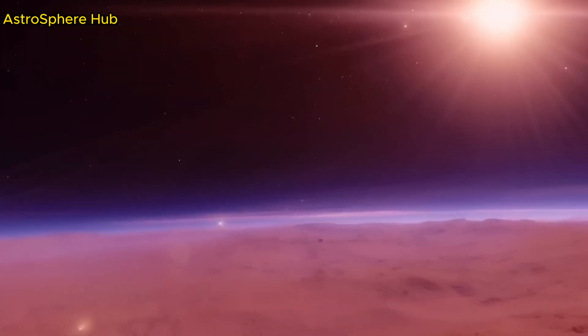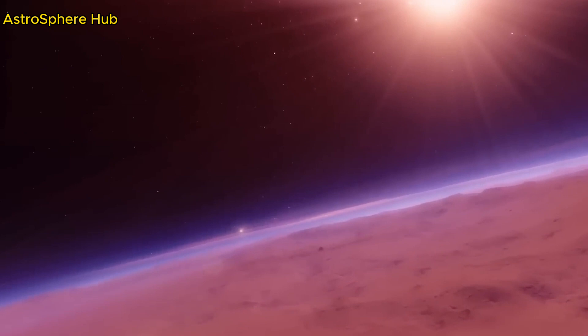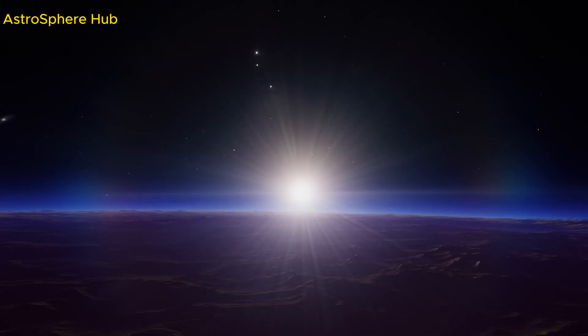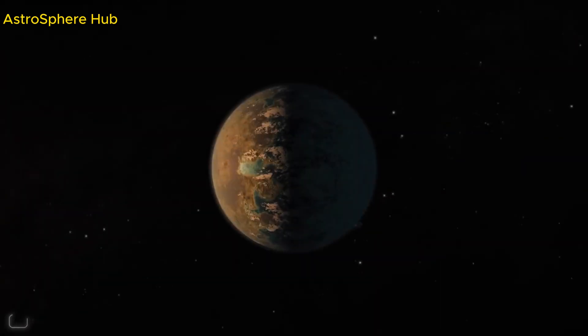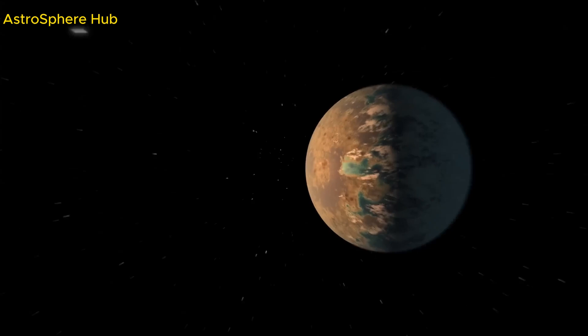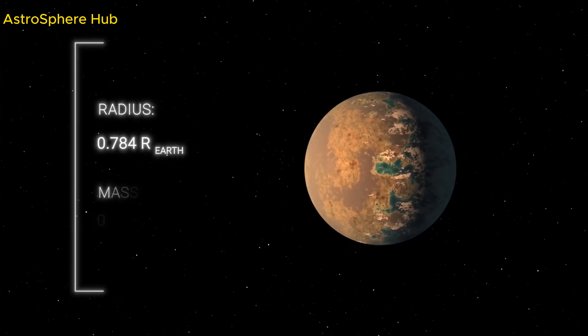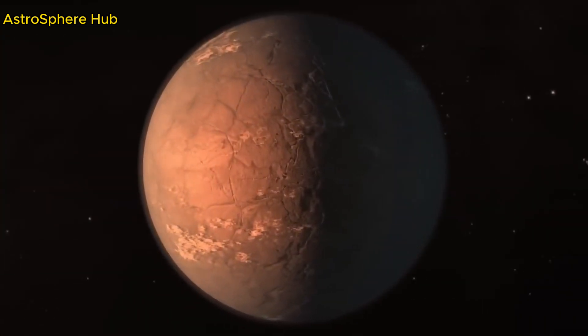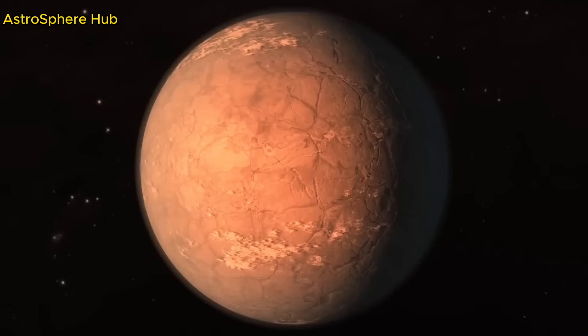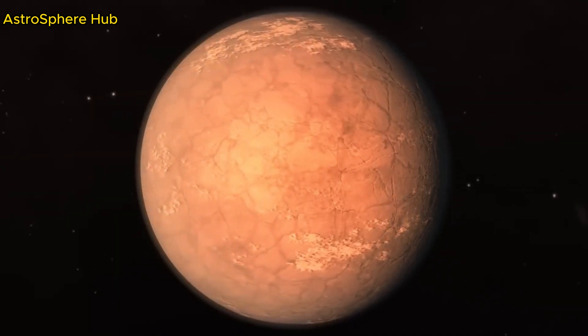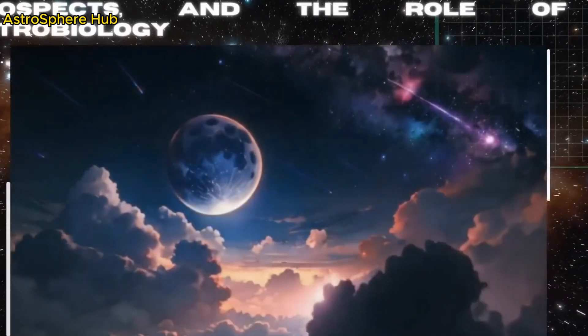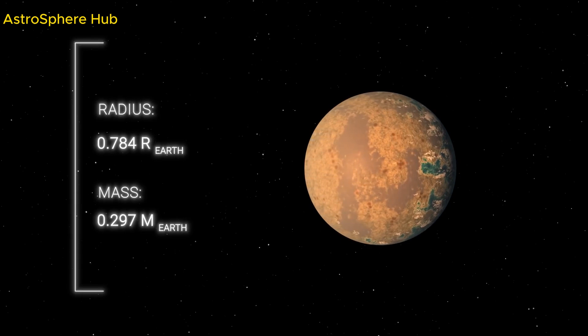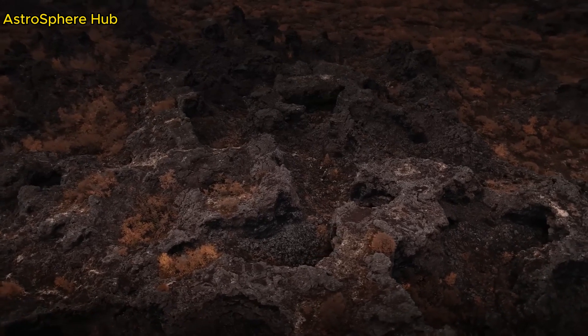That being said, TRAPPIST-1e is considered one of the most Earth-like planets ever discovered. Imagine living in a world where a year lasts about seven Earth days, and the concept of day and night is something completely different from what we're used to. Because of the close proximity to their star, all the seven planets in the system are tidally locked, with one side always facing their parent star.